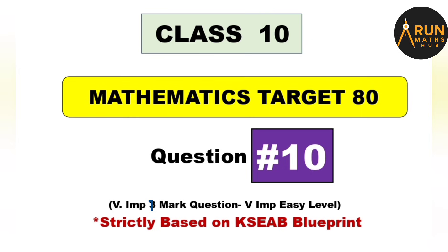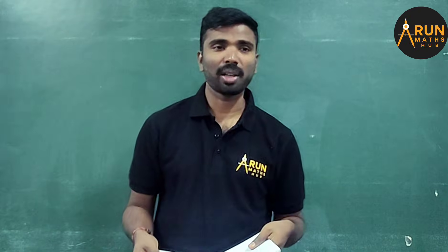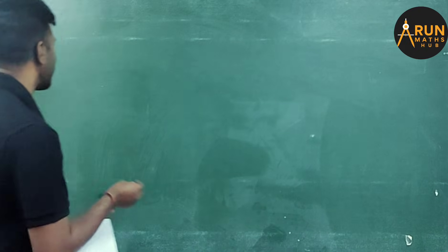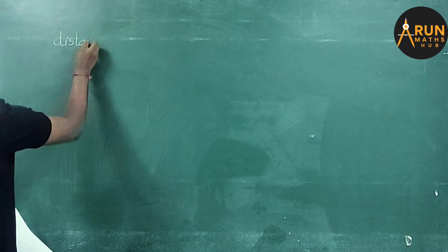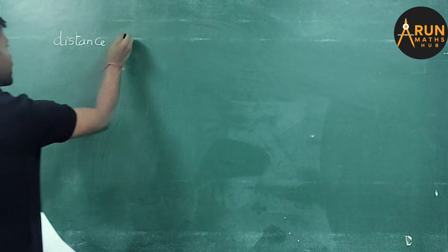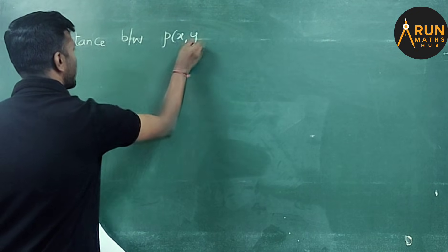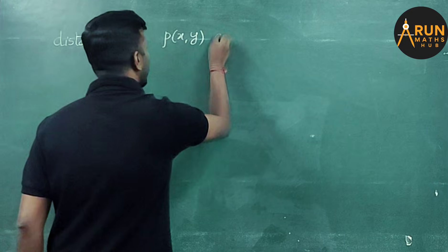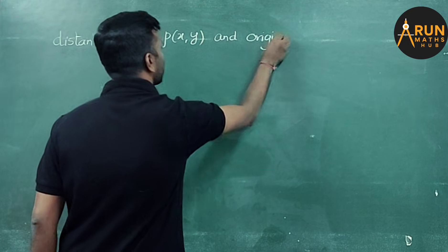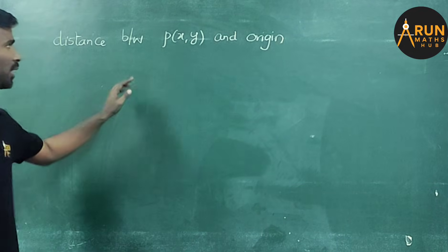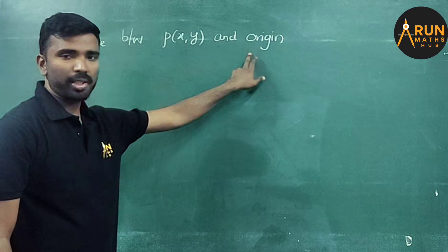Now we'll start with question number 10, Maths Target 80, question number 10, one mark question. That is distance between point P of x comma y and origin.